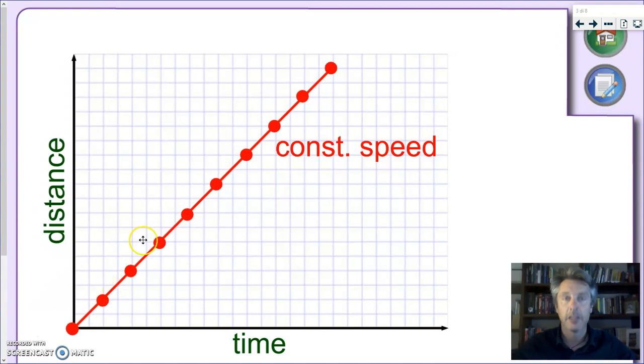And this can apply to any kind of movement with constant speed. So, at this point, we know that, in a distance-time graph, a constant speed is represented by a straight line, like this one.